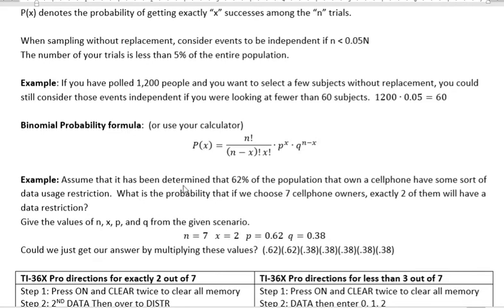So give the values of N, X, P, and Q from the given scenario. N is the number of trials, and we're going to look at seven cell phone users. So there we go, seven. Exactly two of them will have a data restriction. That's what we're asking. X is the number of successes. So success for us is choosing somebody who has a data restriction, so X equals two. Probability of success, 62%. The probability of failure then is 100 minus 62, which is 38, or one minus 0.62, which is 0.38.